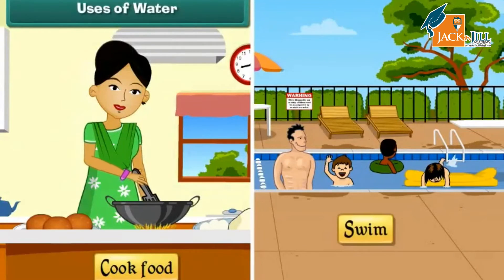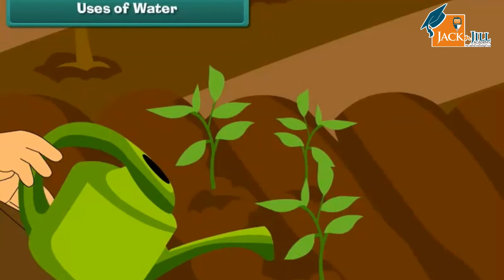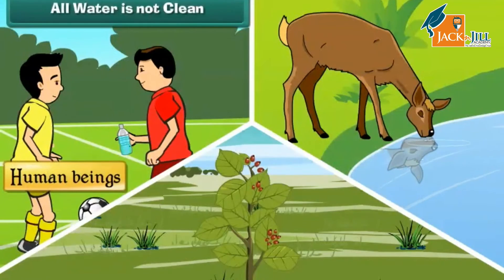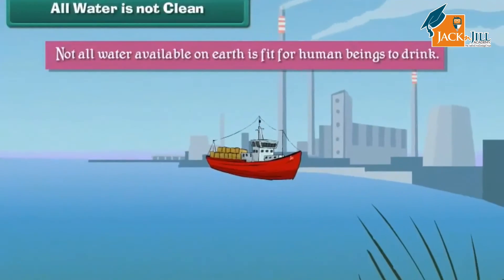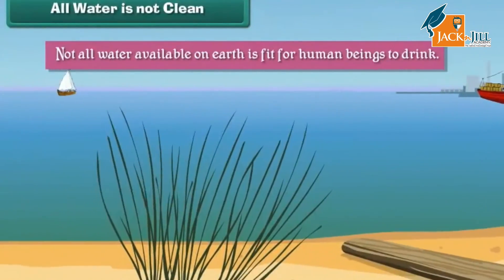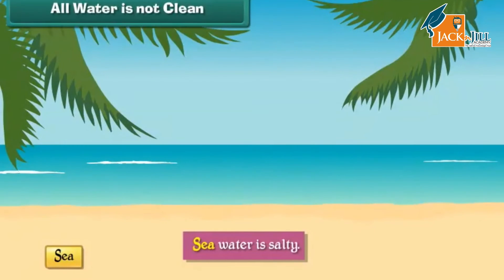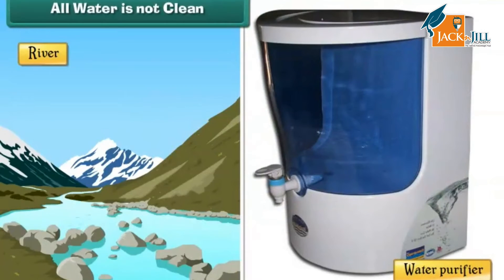We use water to swim and to water our plants as well. All living things — human beings, animals, and plants — need water to live. But not all water available on Earth is fit for human beings to drink. Sea water is salty, and river, pond, and tank water is dirty, so water must be cleaned first.